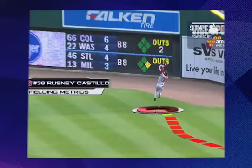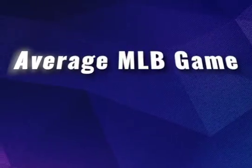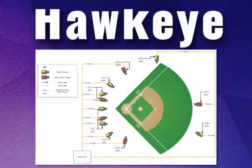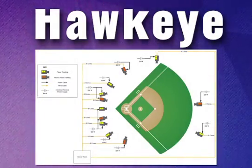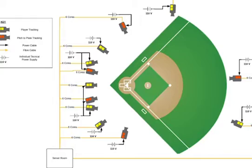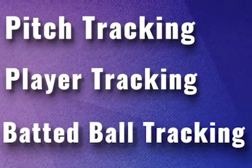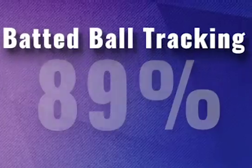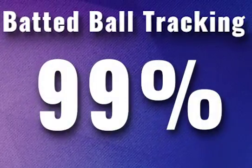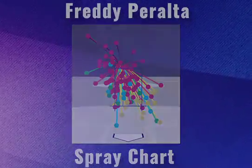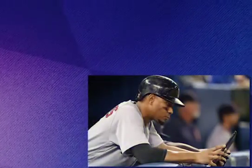Want to know how comprehensive? The data collected throughout an average MLB game totals approximately seven terabytes of data. In 2020, StatCast received a revamp and Hawkeye was implemented. Hawkeye consists of 12 interconnected cameras distributed throughout the ballpark with frame rates over 100 frames per second, all focusing on pitch, player, and batted ball tracking. The new system increased ball tracking from 89% with the previous system to 99%.